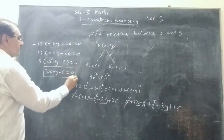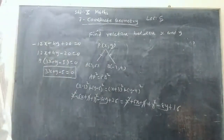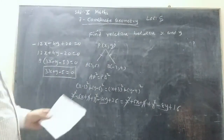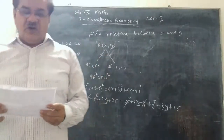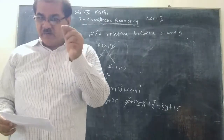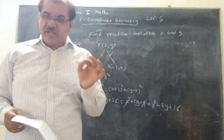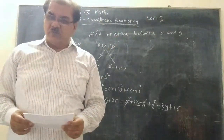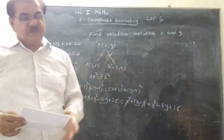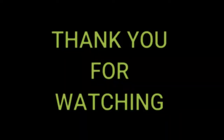So this is the relation established between x and y: 3x + y - 5 = 0. I have taken the majority of the questions of Exercise 7.1. A few questions I have omitted — those are for you to try at home. Please try them and write the exercise in your notebook. In the next period, we will learn further in this chapter. Thank you very much.